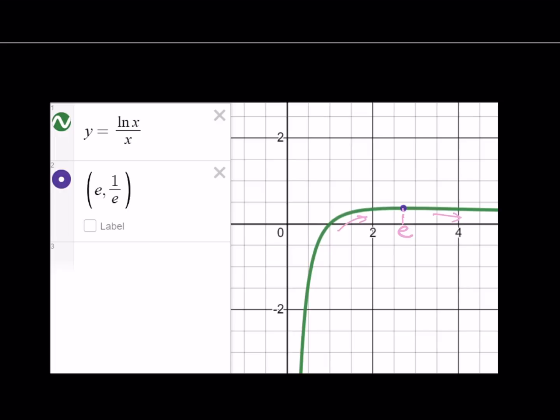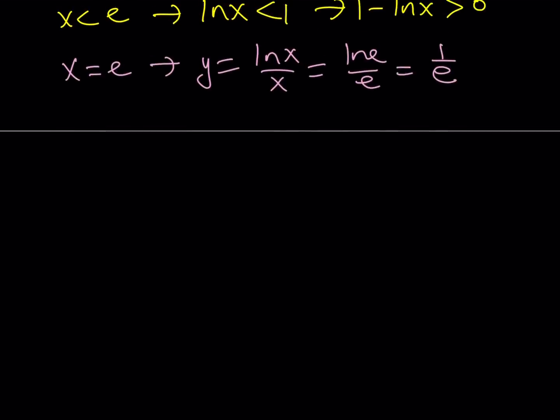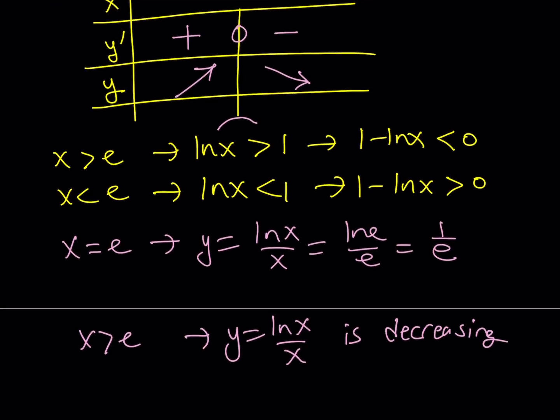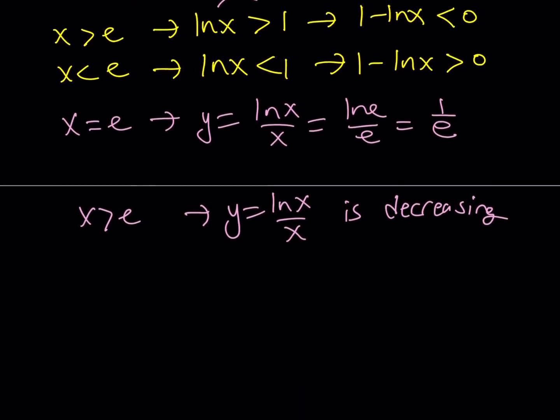Great. Now, what does this mean? Our function is increasing and then decreasing, right? Making a maximum. So, for x is greater than e, y equals ln x over x is decreasing, right? And, you can check that one more time on the table. Our function is decreasing for x values that are greater than e. Great.